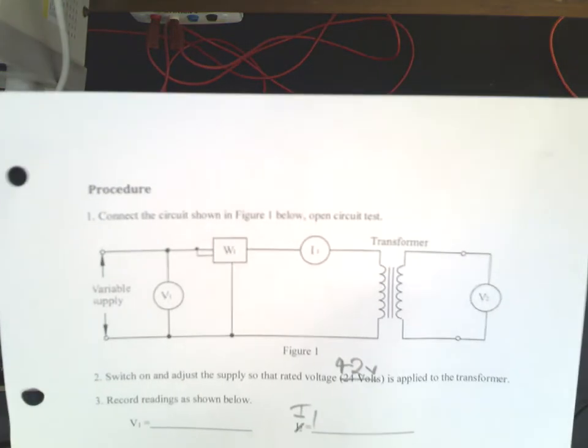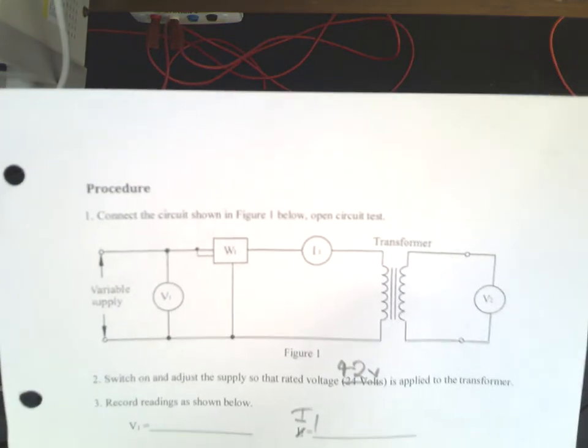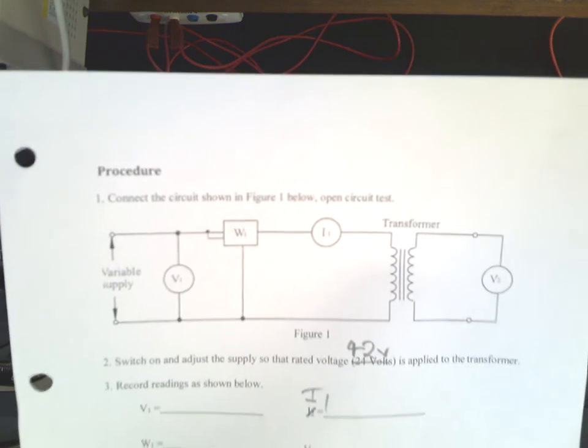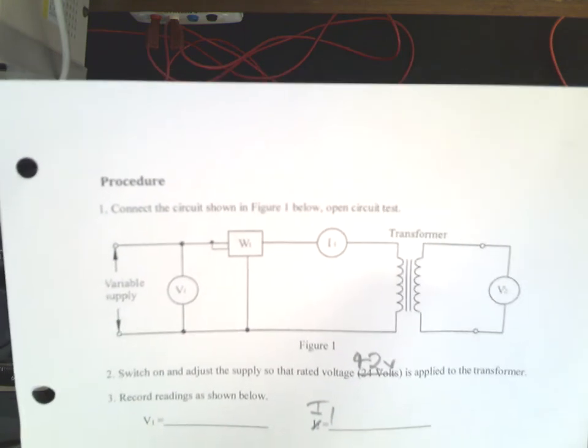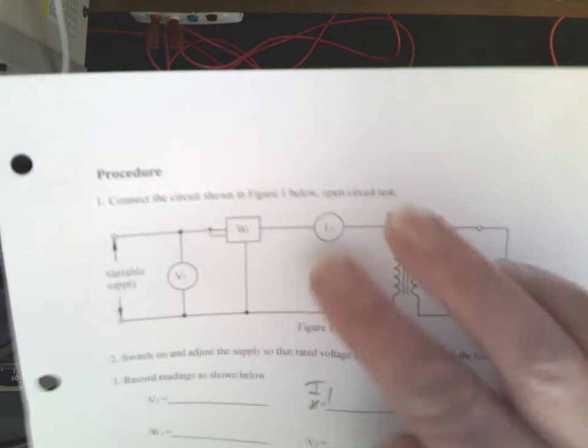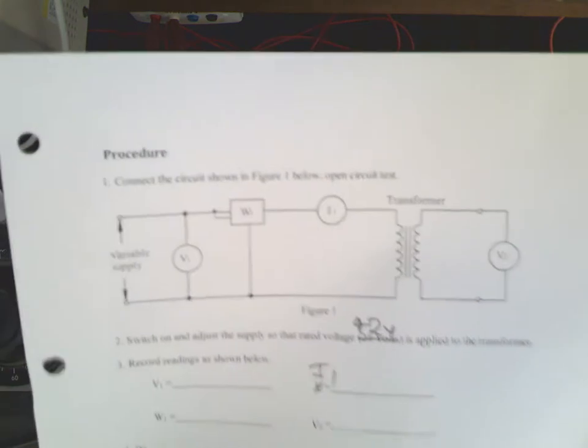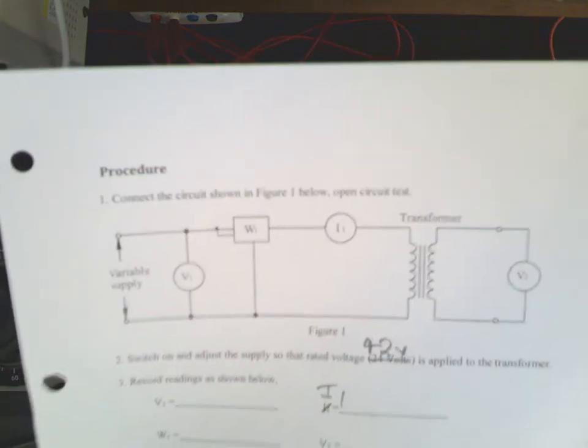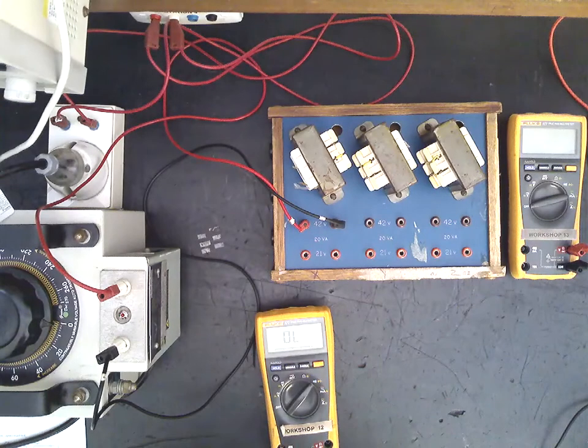There's our open circuit test for the transformer. So we've got a watt meter in the primary of the transformer, a volt meter across the supply, and an ammeter down here that's measuring the current for our iron loss test in the transformer.